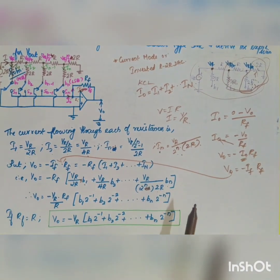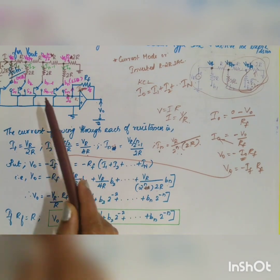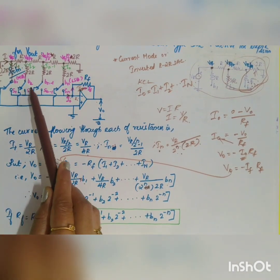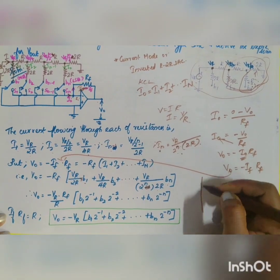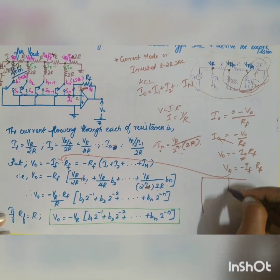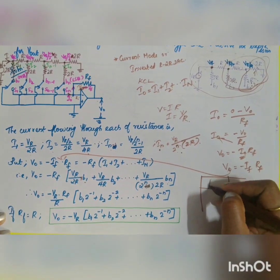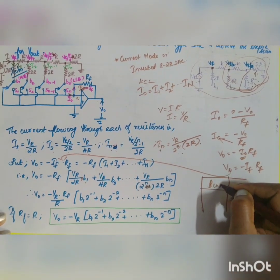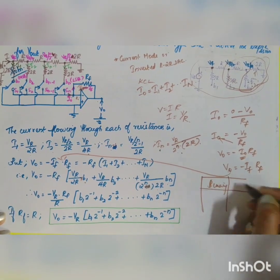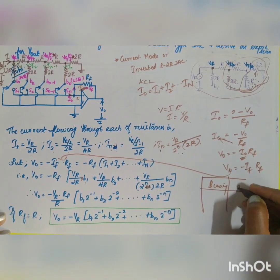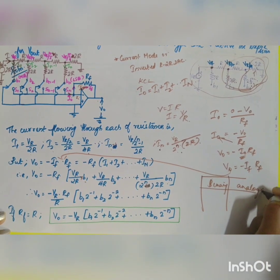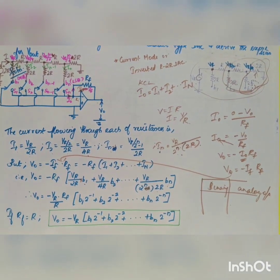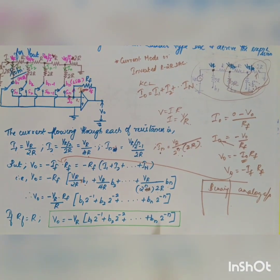Ultimately, what this circuit does is take a binary digital input and convert it into an analog output. That is why it is called a Digital-to-Analog Converter (DAC).